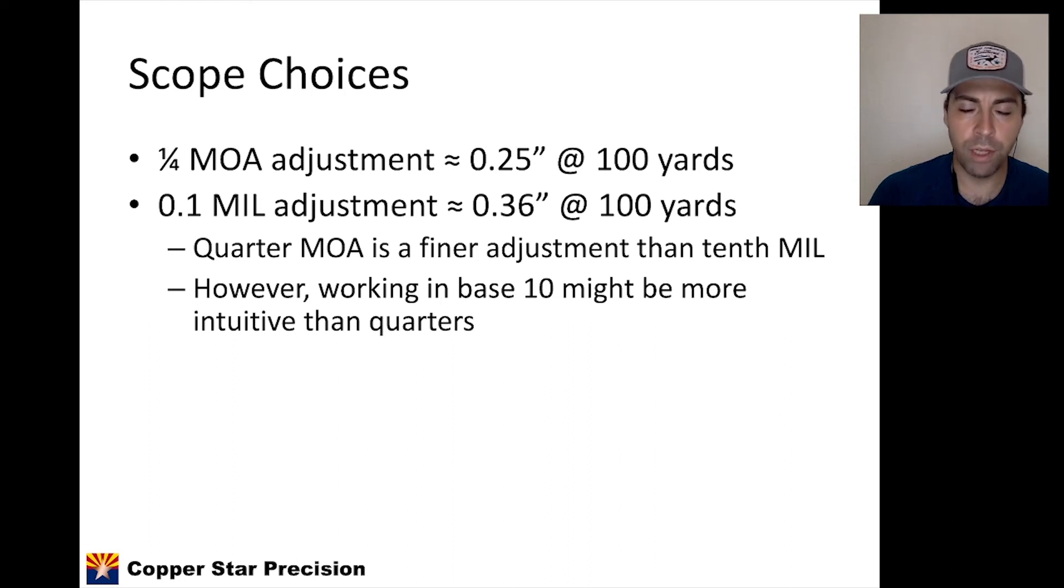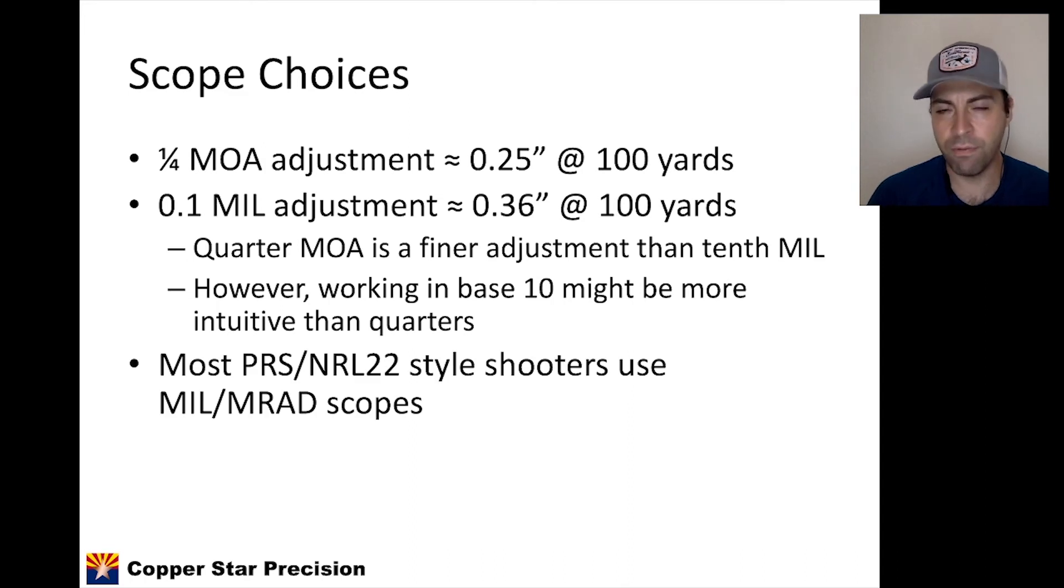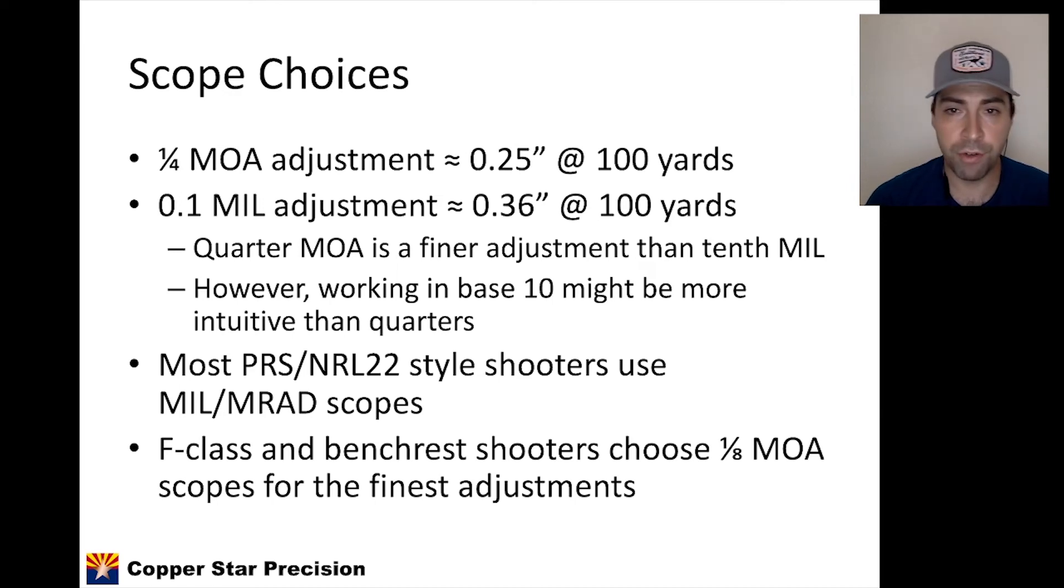However, most people in the PRS and NRL world use mil scopes. I think working in base 10, sort of the metric style of doing things, is a little bit more straightforward than thinking about quarter, half, three-quarter, and then full adjustments. On the other side, the super accurate side, F-class shooters and benchrest shooters actually choose scopes that have eighth MOA adjustments for the finest adjustment possible. So they have extremely fine adjustments, extremely fine aiming points. They want the maximum resolution when it comes to each click on their turret to make those minute adjustments.